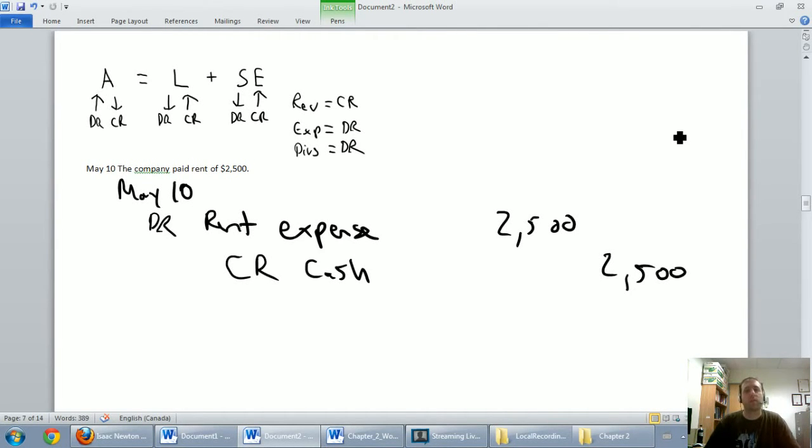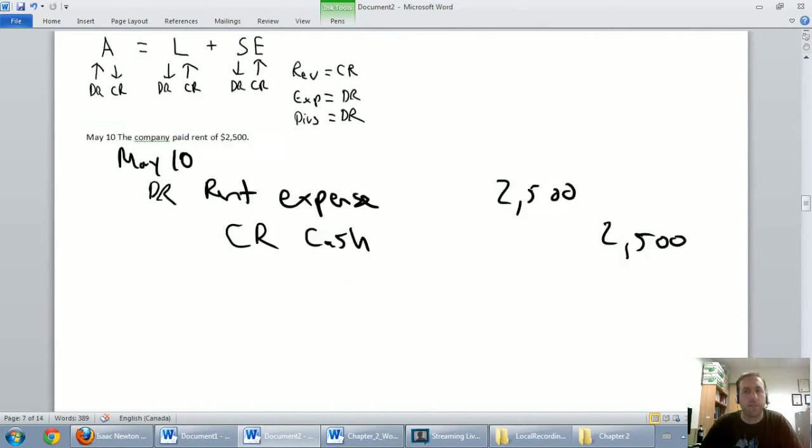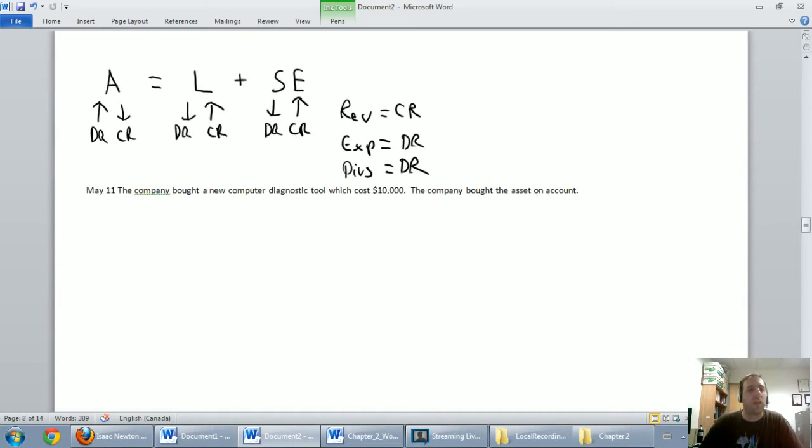We've just completed our May 10th transaction, time to move on to the next one. May 11th, the company bought a new computer diagnostic tool which cost $10,000. The company bought the asset on account. Okay, there's that magic word again, we bought something on account.